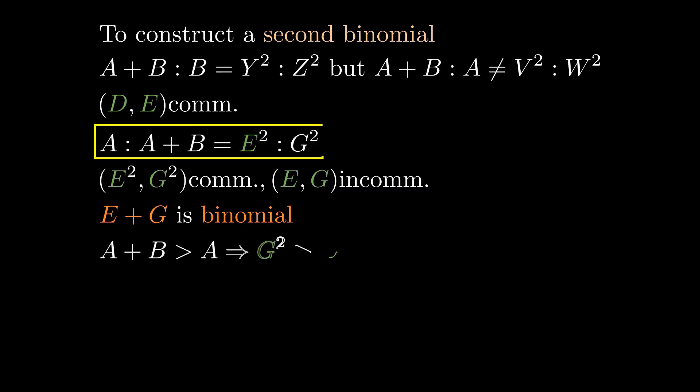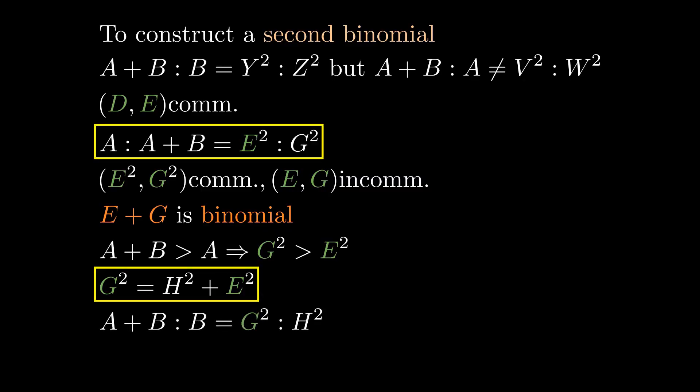A plus B to A is proportional to G squared to E squared, and A plus B is greater than A, so G squared is greater than E squared. Let G squared equal E squared plus H squared, then A plus B to B is proportional to G squared to H squared.